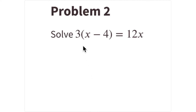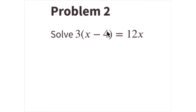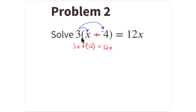This is problem number 2, in which you solve an equation to find the value of x. First, I'm going to change subtracting a positive 4 to adding a negative 4. Then I'll distribute the 3: 3 times x gives 3 groups of x, and in each of those 3 groups there's a single x. The -4 gives a -12, so 3(x + (-4)) = 3x - 12, and that all equals 12x.